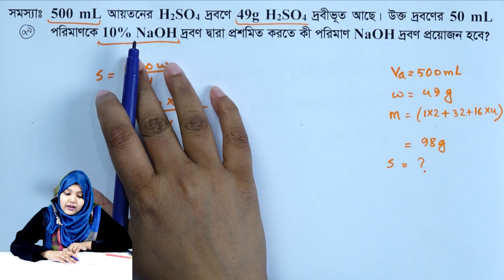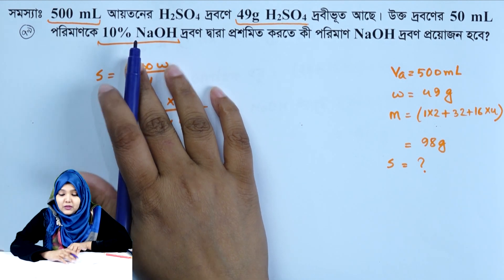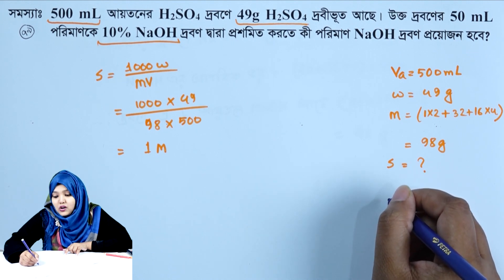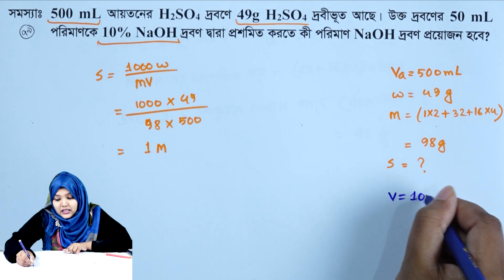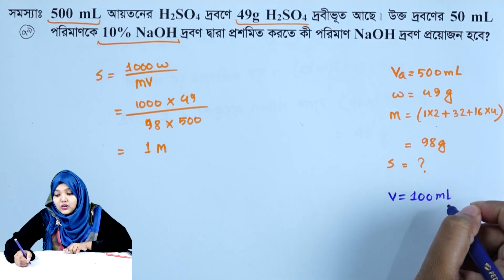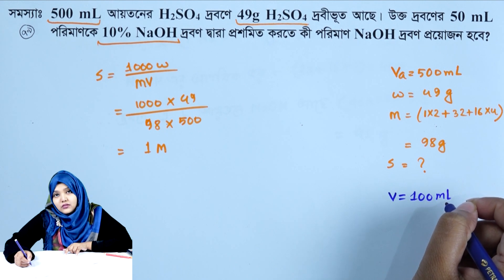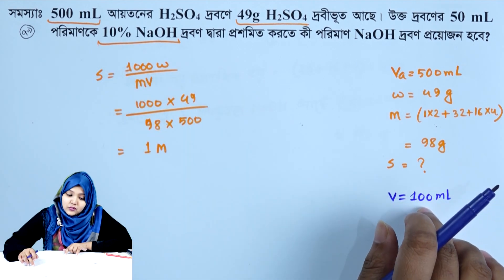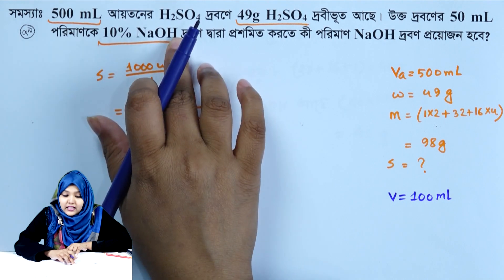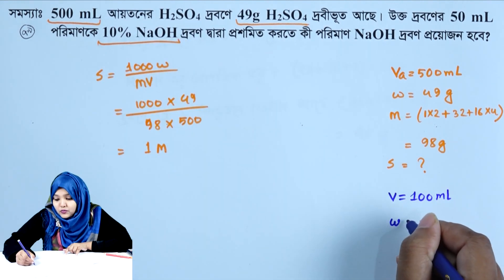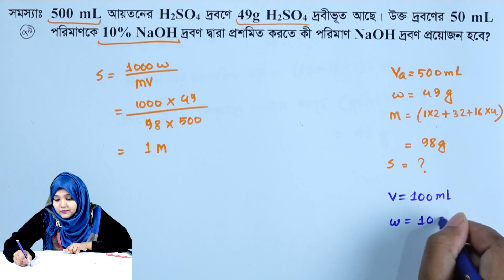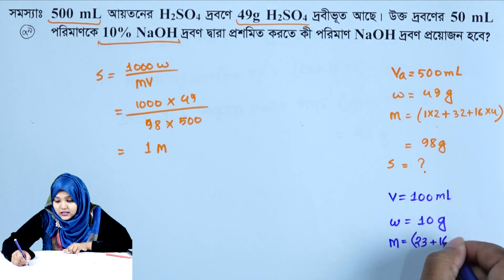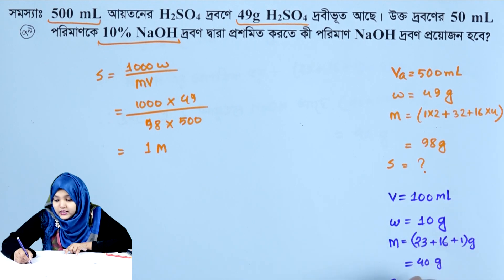Now for 10% sodium hydroxide solution: molarity calculation. We know that 100 milliliters of solution contains 10 grams of sodium hydroxide. So W equals 10 grams. Molecular weight of sodium hydroxide: 23 plus 16 plus 1 equals 40 grams per mole.